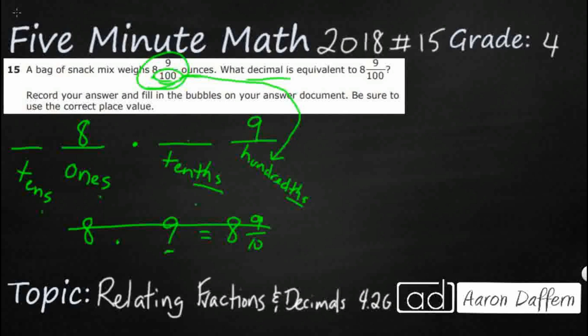So when you have a fraction that has a denominator of ten, only ten, it matches your tenths. When you have a fraction with a denominator of one hundred, it actually matches your hundredths. And thousand goes to thousandths.